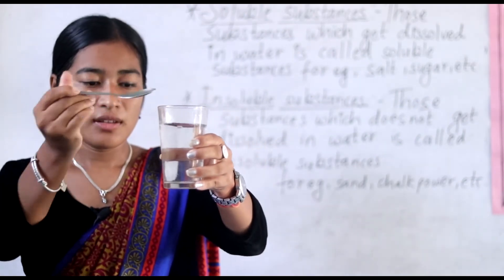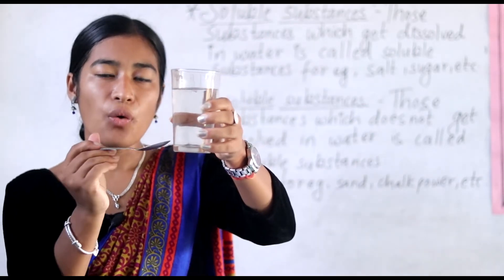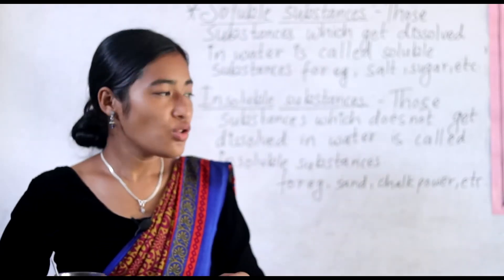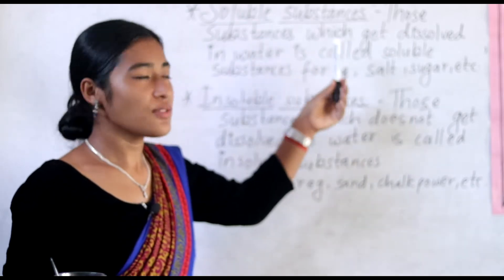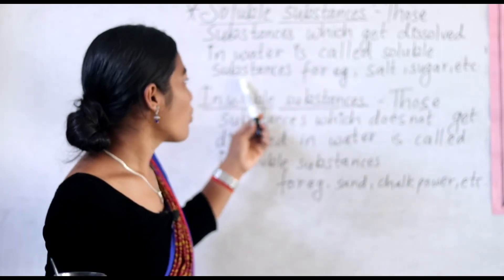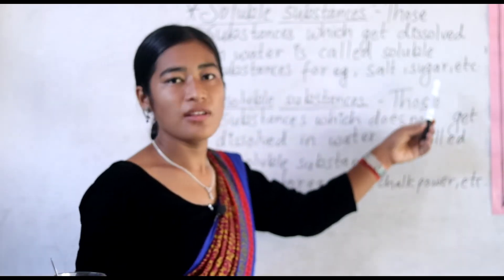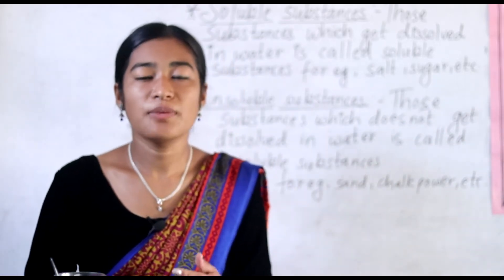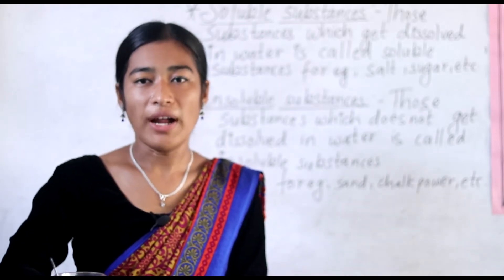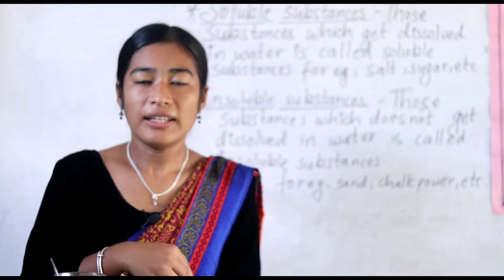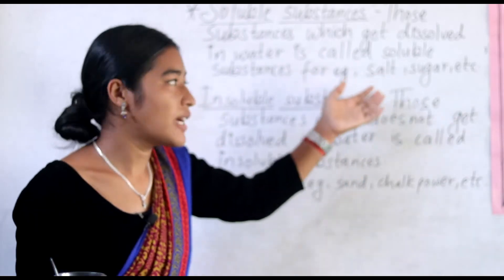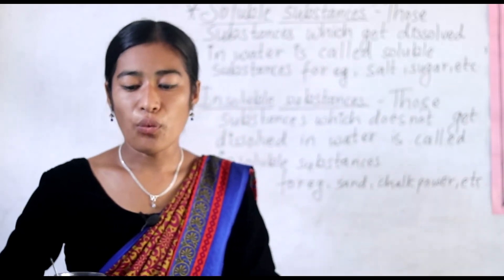You can see here — the sugar gets dissolved in this water. So sugar is a soluble substance. Those substances which get dissolved in water are called soluble substances. For example, salt and sugar. Salt also gets dissolved in water, and sugar also gets dissolved in water.